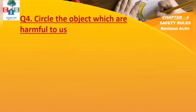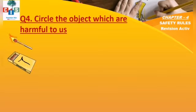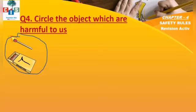The next question is to circle the objects which are harmful to us. You have to see the objects and circle those which are harmful. First one: matchstick — is it harmful or not? Yes, it's harmful, so you just circle it.